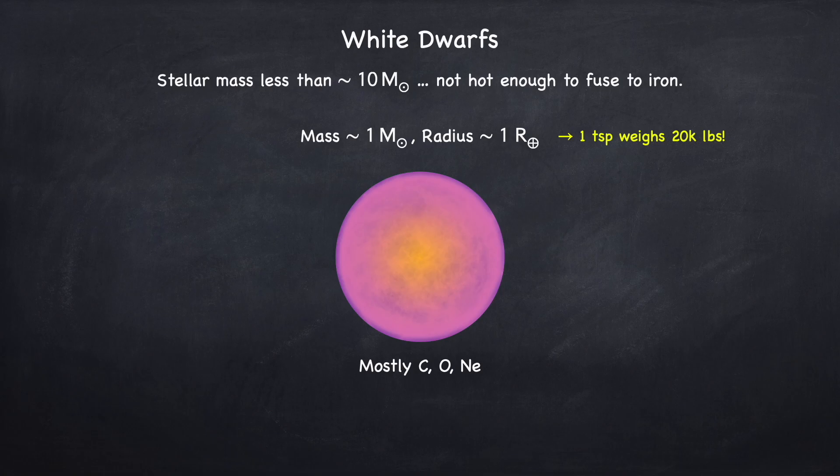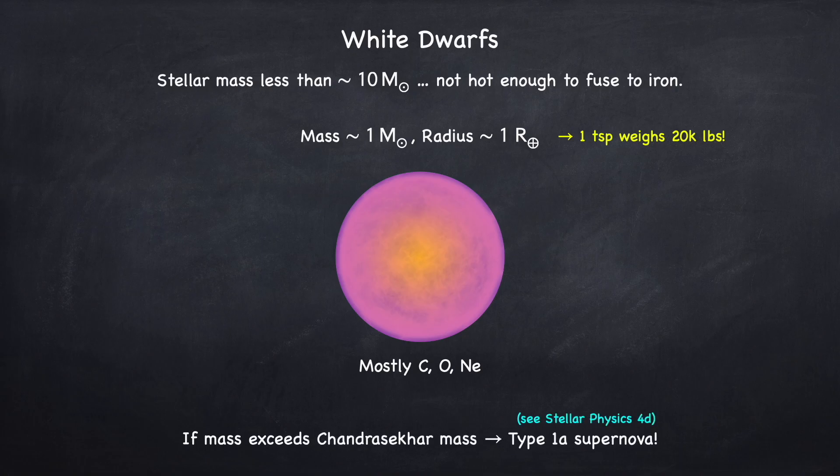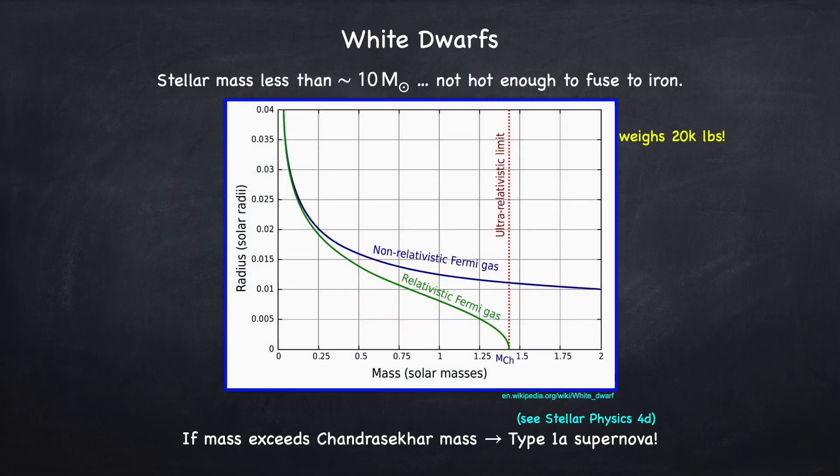If the white dwarf somehow manages to pile on some mass, and its mass eventually reaches what's called the Chandrasekhar limit, it will explode in what's called a type 1a supernova. I'm not going to cover the Chandrasekhar limit in this video, because I covered it in detail in stellar physics 4d. So if you want to know about it, you can watch that video. In this video, I'm just going to show you a plot of the radius of the white dwarf at stability versus its mass. So this green line is the relativistic model, and the blue line is the non-relativistic model. The correct model is the relativistic model. The non-relativistic model is an approximation. So we can see here that once you get to the Chandrasekhar limit, which is about 1.4 solar masses, the stable radius goes to zero, which means that a little bit before the Chandrasekhar limit, the star is going to go unstable and collapse.